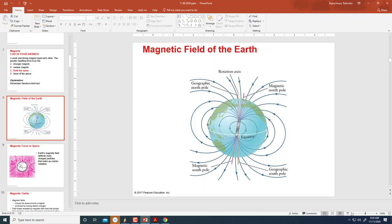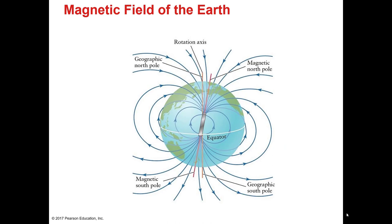Earth is also a kind of magnet — it has a magnetic field. The origin is the molten iron core at the center of the Earth. This core is spinning on its own axis, and because of that spin it produces a net magnetic field.